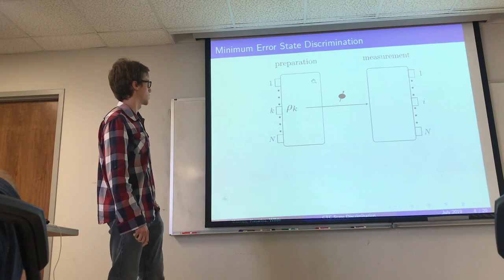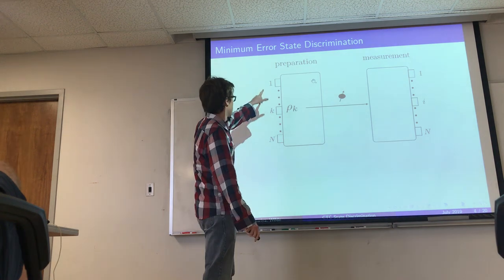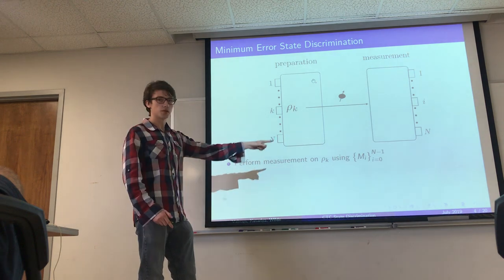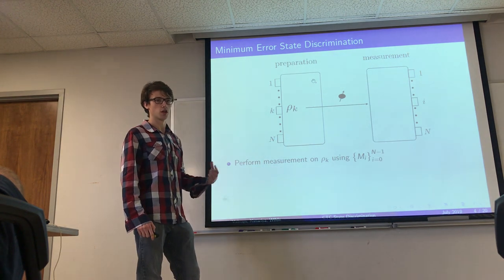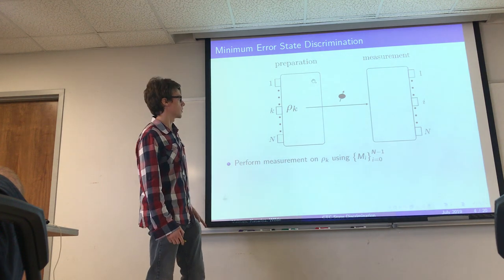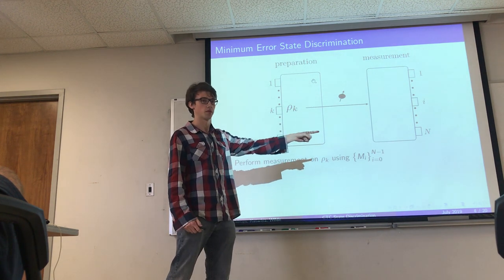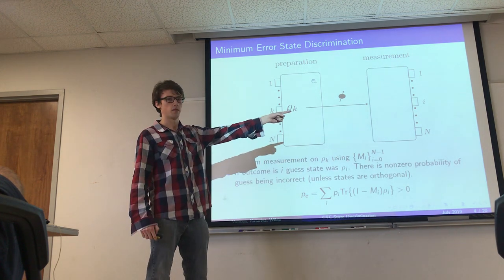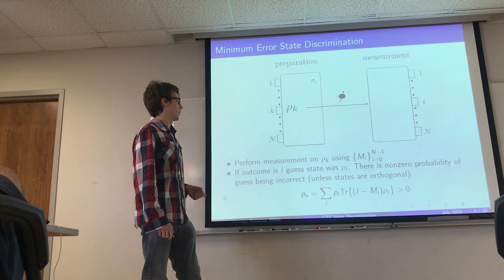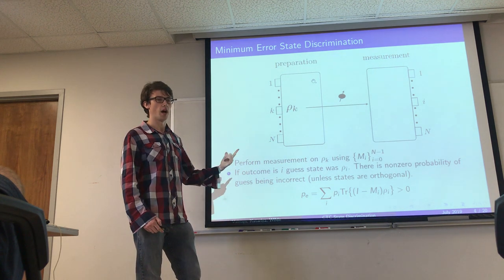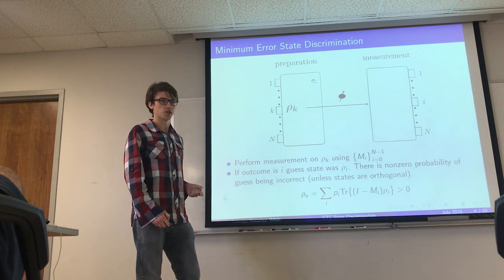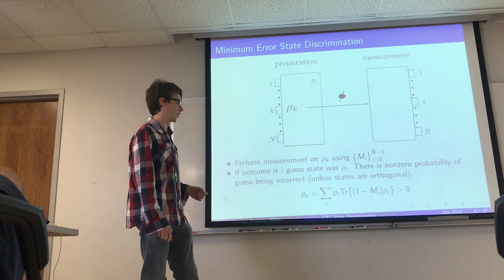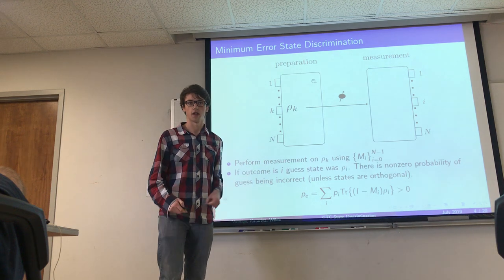You can represent this state discrimination with a diagram. Alice picks the state according to a preparation machine and sends it to Bob. Bob uses a set of n measurement operators to determine the state he was sent, meaning he has n possible measurement outcomes. If he gets measurement outcome i, he guesses that Alice sent him state ρ_i. This provides a convenient method of quantifying the probability of error — the probability that his guess was wrong. For non-orthogonal states, the probability of error will always be greater than zero.